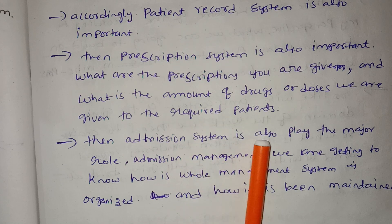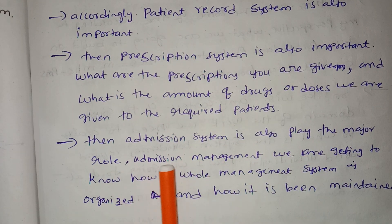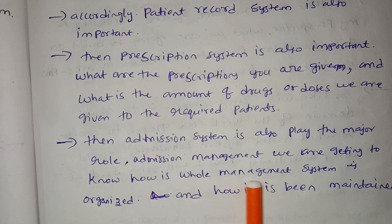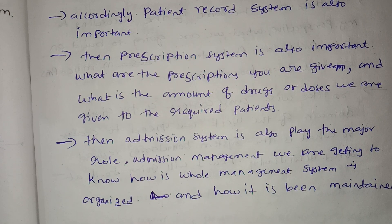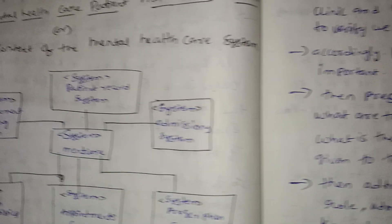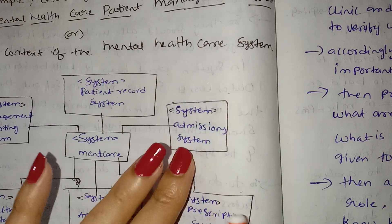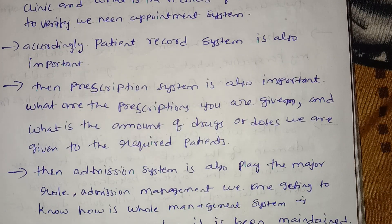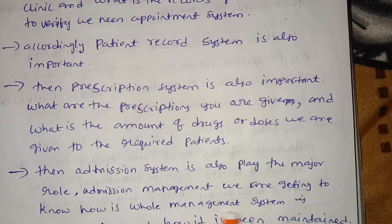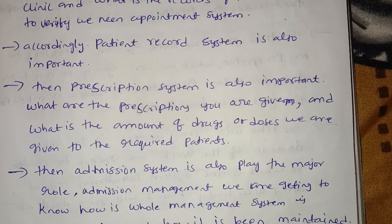An admission system also plays a major role. Admission management helps us understand how the whole management system is organized and how it is maintained. The admission system performs the main role of admission management.